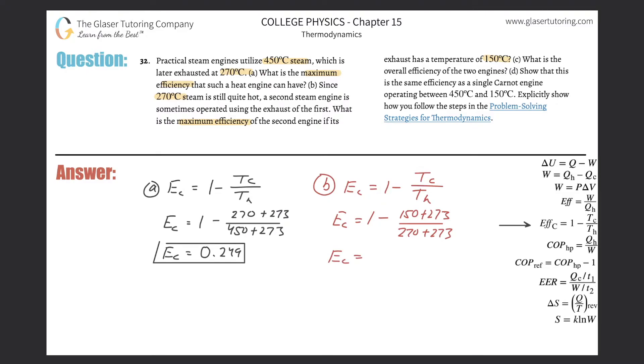So this is 150 plus then the 273, then divide that whole thing now by 270 plus the 273. Don't forget to subtract that from one and I get a value of about 0.221. All right. So about 22.1%. So now, all right, what does part C now say?